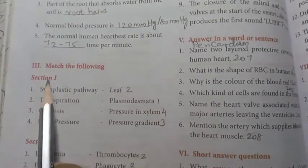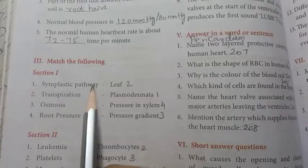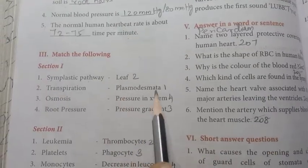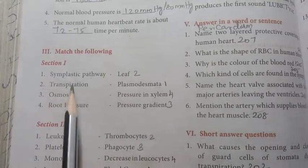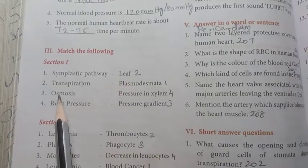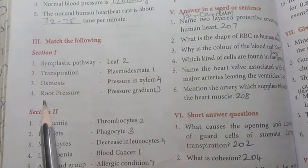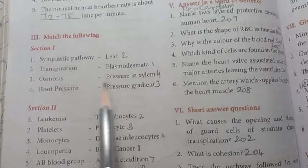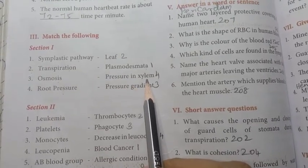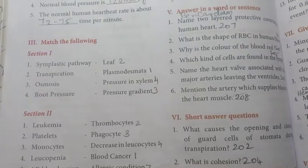Roman number three, match the following section one: symplastic pathway - plasmodesmata, transpiration - leaf, osmosis - pressure gradient, root pressure - pressure in xylem. The answer number is 2, 1, 4, 3.